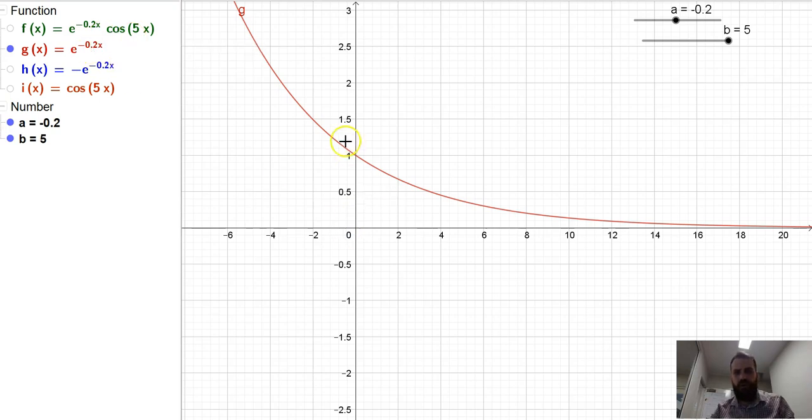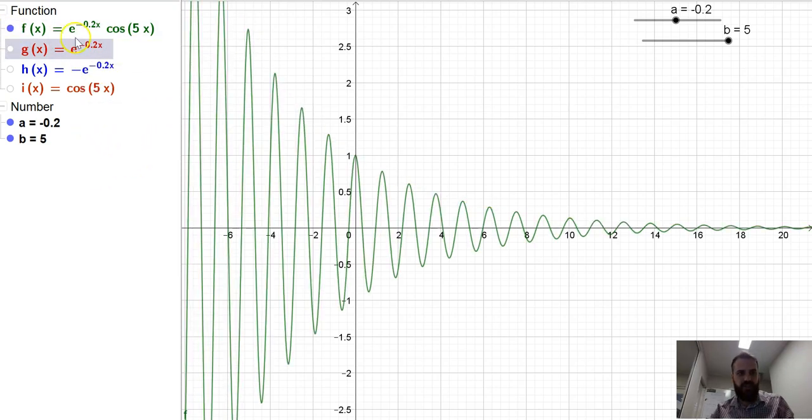You might want to think about why that's always 1. When x equals 0, what happens to our function? But that means that with these particular functions, these damped functions of the form e to the ax cos bx, you're always going to have an x-intercept here of 1.